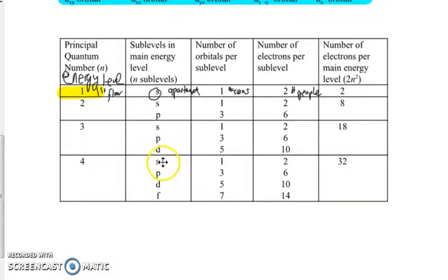And then the fourth floor of the hotel. Now we have four different apartments. The S has one bedroom, two people. The P apartment has three bedrooms, hold up to six people. And the D apartment has five bedrooms, holding up to 10 people. And the F apartment, super deluxe, has seven different bedrooms and can hold up to 14 people for a total of 32 people living on the fourth floor. Looking at the electron example then, there can be up to 32 electrons on that fourth energy level arranged in these different orbital paths.